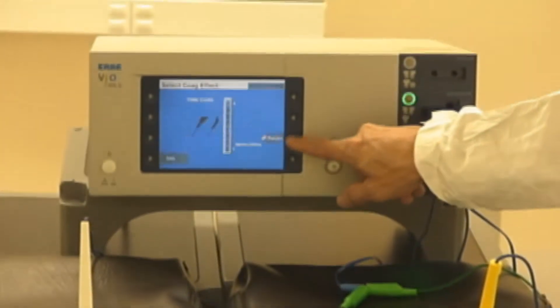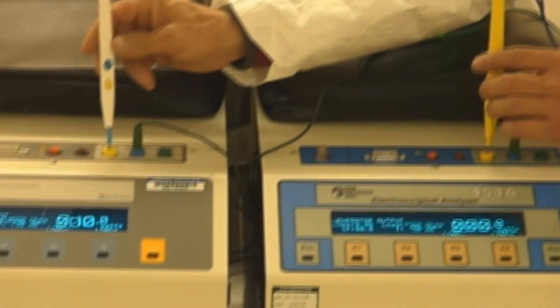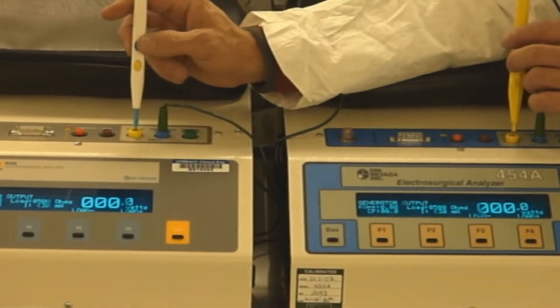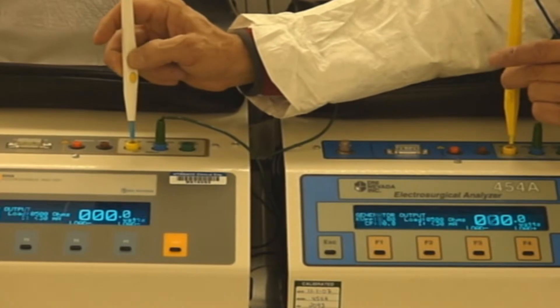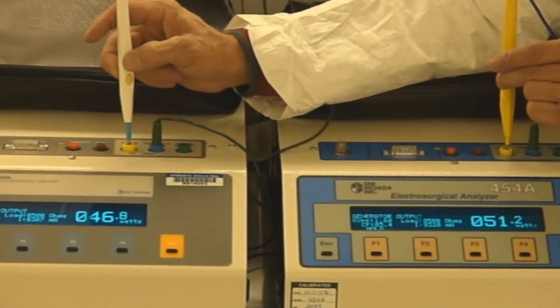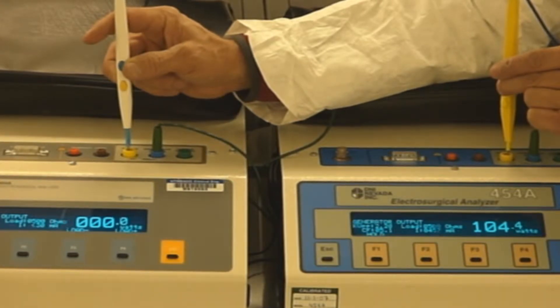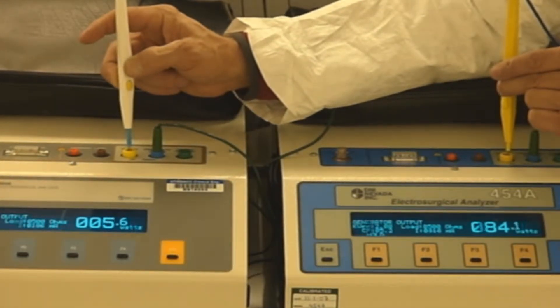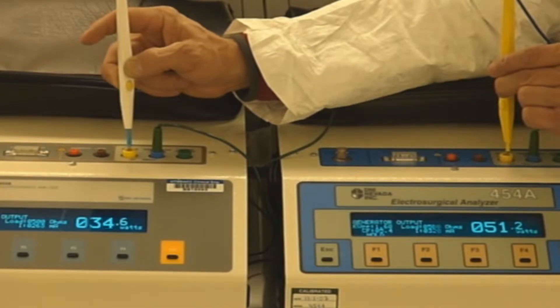Now we're going to go ahead and go to effect seven and do the same thing. Here again, we're at 500 ohms this time, that's the difference. Here we go, simultaneous activation. Surgeon one drops out, you saw the shift. Surgeon one comes back in, there's the split. Surgeon two drops out, there's the shift. Surgeon number two comes back in, and there's the split.